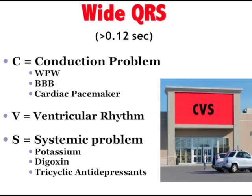In my system of interpreting 12-lead EKGs, I use the mnemonic CVS — like cardiovascular system or like a CVS pharmacy. Is it a conduction problem? Is it a ventricular rhythm? Or could it be some systemic problem? When you look at conduction pathologies, could this be WPW? Could he have a bundle branch block, like a new onset of AFib with aberrant conduction? He doesn't have a pacemaker, so we throw that one out.